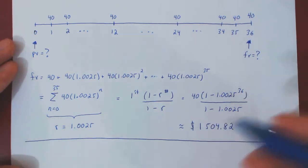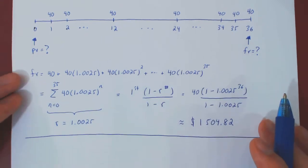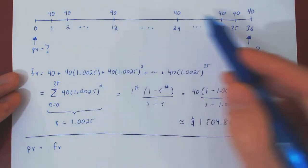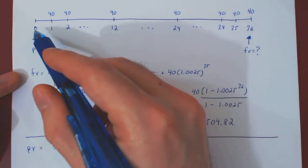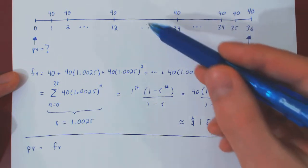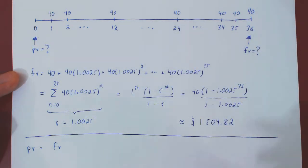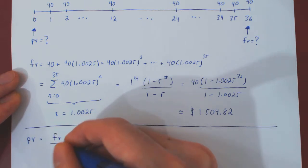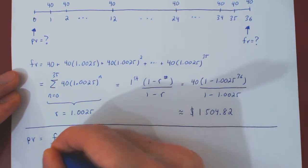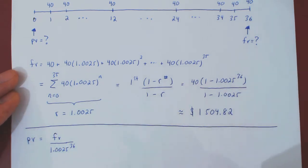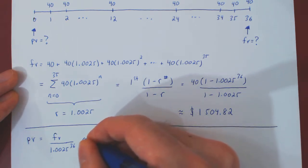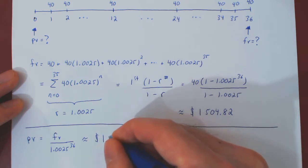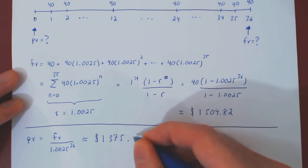As in the previous example, we can find the present value directly from the final value. We simply have to bring the final value — the value of the investments after 36 months — back to month zero. We have to move back 36 months, so we divide by 1.0025 thirty-six times, that is divided by 1.0025 to the 36. Evaluating this gives approximately $1,375.46.